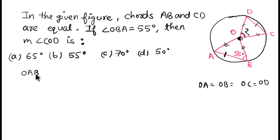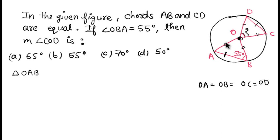Looking at triangle OAB, we can see it is an isosceles triangle because OA and OB are equal. From the property of an isosceles triangle, the angles opposite the equal sides are also equal. So if the angle opposite one side is 55 degrees, the angle opposite the other equal side is also 55 degrees.